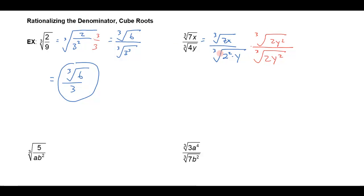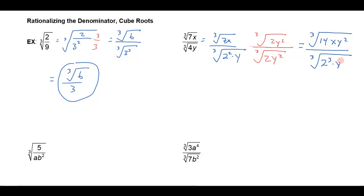The reason I'm doing that is so that I can get the cube root of 2 cubed and the cube root of y cubed. In the numerator that's going to give me the cube root of 7 times 2, that's 14, and I'll have an x times y squared. There are no perfect cubes in that numerator so I'm not going to be able to simplify that anymore. In the denominator I'll get the cube root of 2 cubed times y cubed, and then I can simplify that denominator. So here's my final answer: the cube root of 14xy squared, divided by — the cube root of 2 cubed is 2, the cube root of y cubed is just y.